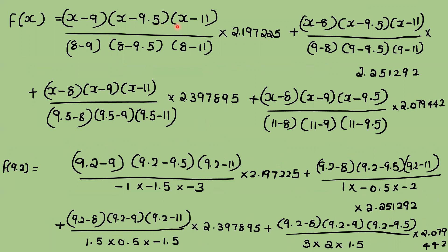Substituting numerical values: [(x-9)(x-9.25)(x-11) / (8-9)(8-9.5)(8-11)]·2.197225 + [(x-8)(x-9.5)(x-11) / (9-8)(9-9.5)(9-11)]·2.251292 + [(x-8)(x-9)(x-11) / (9.5-8)(9.5-9)(9.5-11)]·2.397895 + [(x-8)(x-9)(x-9.5) / (11-8)(11-9)(11-9.5)]·2.079442.